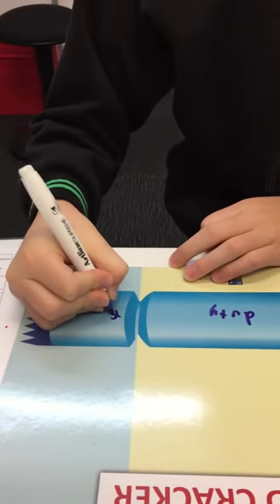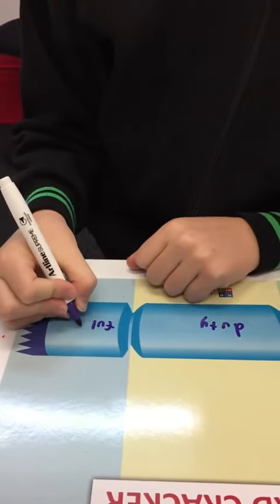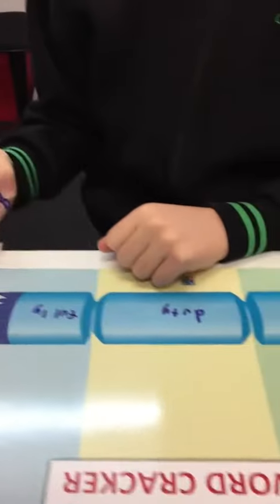Do you remember how to spell suffix full? Remember, it's just a one L. Good. And what's the last suffix? Three. There we go. Okay, so we've got our base word, duty, and our two suffixes.